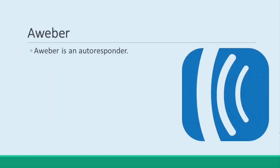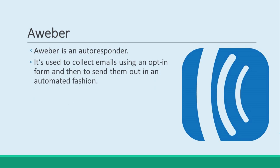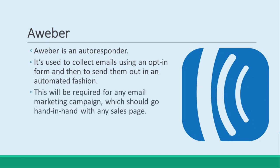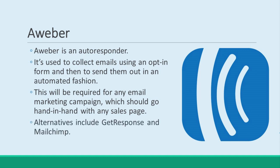AWeber is an autoresponder, meaning that you can use it to collect emails using an opt-in form and then send them out in an automated fashion. This will be required for any email marketing campaign, which should go hand-in-hand with any sales page. Other options include GetResponse and MailChimp, either of which will also offer all the basic features you need.